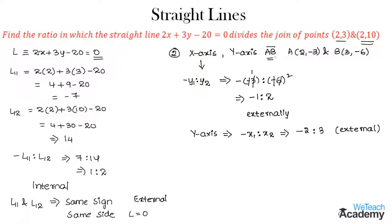Both the axes divide the line segment AB externally. Remember all these formulas: when the signs of L11 and L12 are opposite, the division is internal, whereas if L11 and L12 have same sign, they lie on the same side of the given line L equals 0 and their division is external.